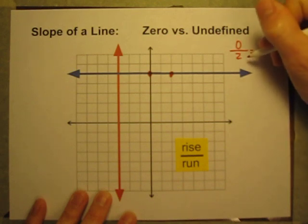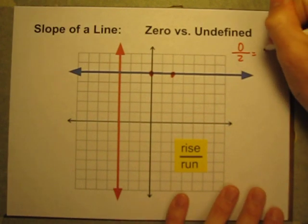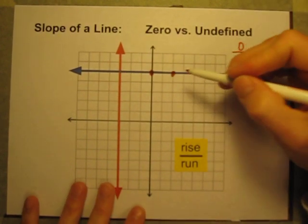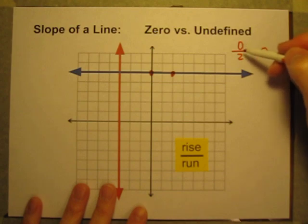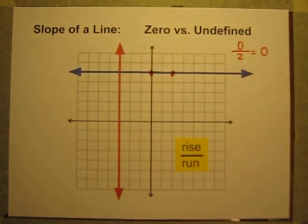So rise over run with zero divided by two. How many twos does it take to get to zero? It takes zero twos. So when there's no rise, but there's run, side to side run, that's going to have a slope of zero. So when the rise is zero, the slope is zero.